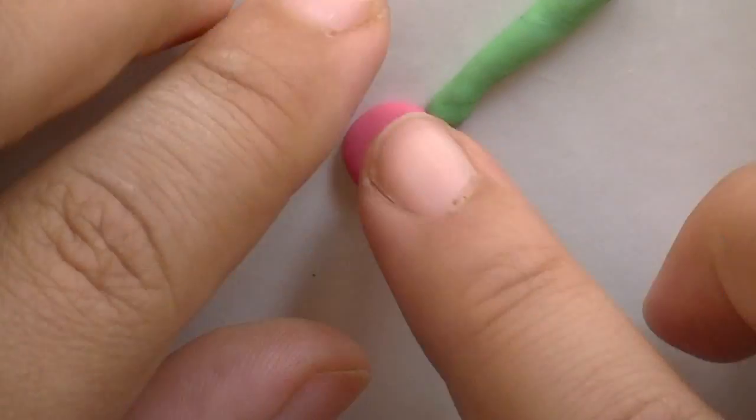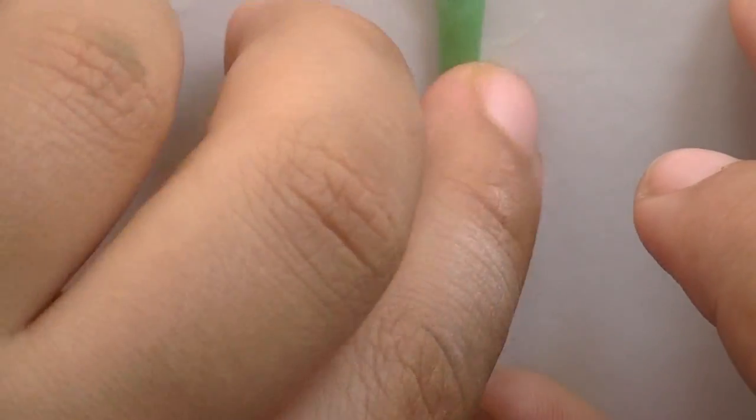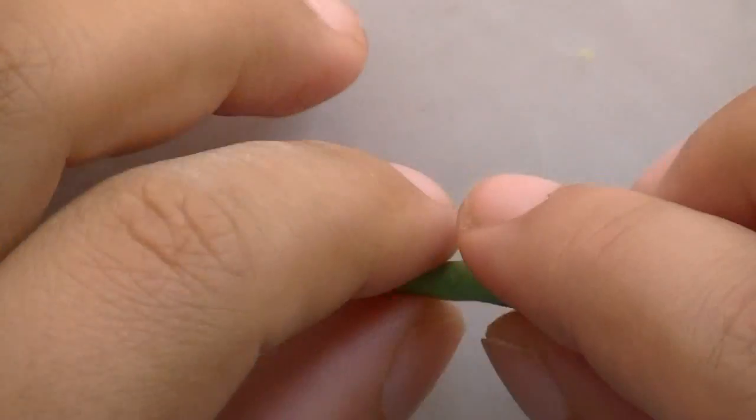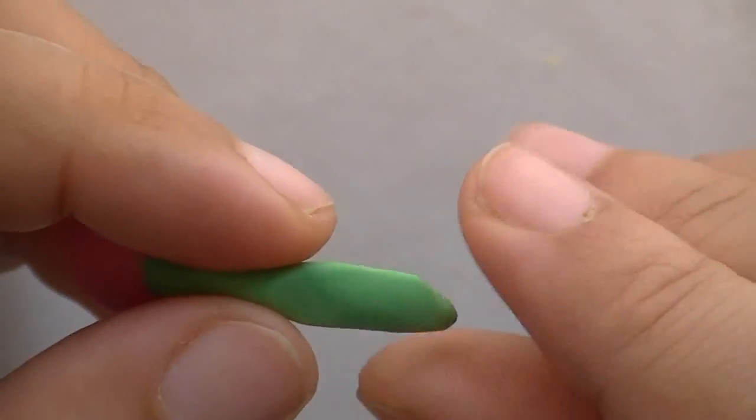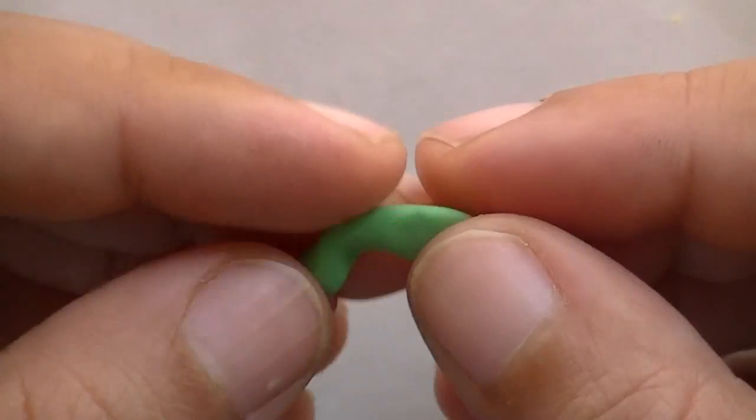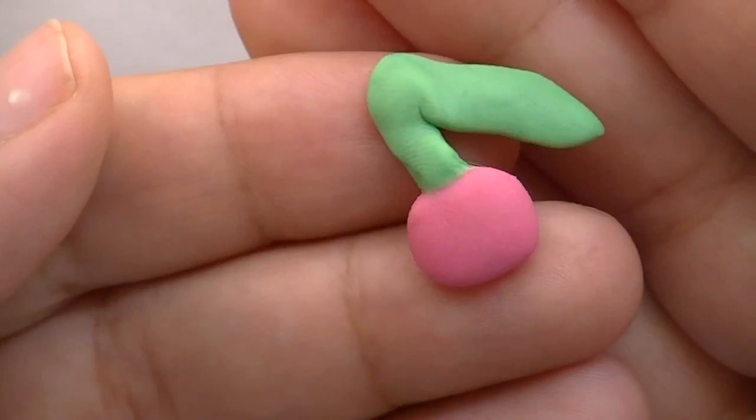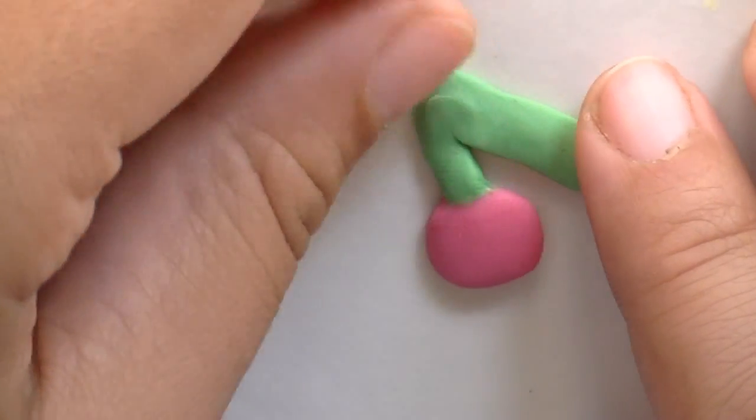Now place your stem on top of the cherry and smooth it in back and forth. Don't worry if the colors blend in a little because usually gummies have blended colors. Once you have this piece, start flattening the top and making a leaf shape out of it. Once you have this shape, bend the tip so that you're getting something that looks like this. Now smooth it out.